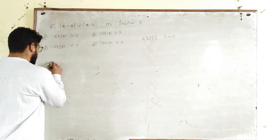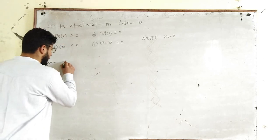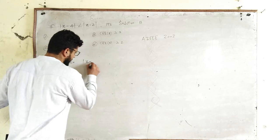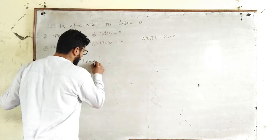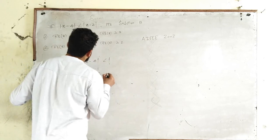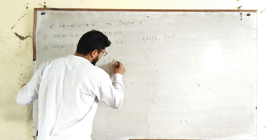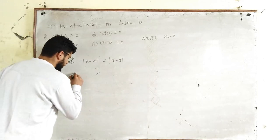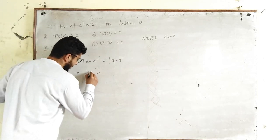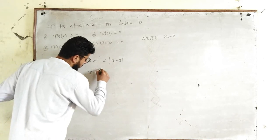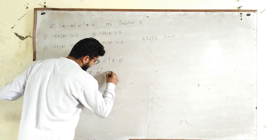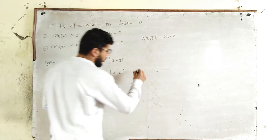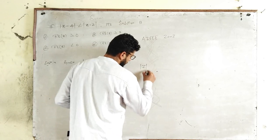I will write the given inequality: |z - 4| is given to be less than |z - 2|. Now I can write this implies that (z - 4) whole square is less than (z - 2) whole square.